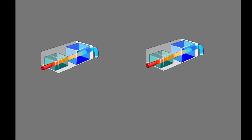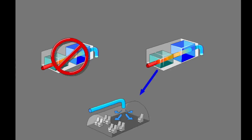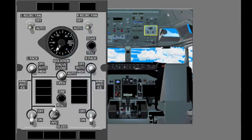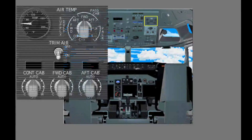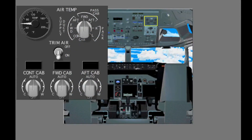The two packs are the same, and one pack can supply a sufficient quantity of conditioned air and pressure for all operations. The controls and indications for the air conditioning packs are on the forward overhead panel, on the air conditioning bleed air controls panel and the cabin temperature controls panel.